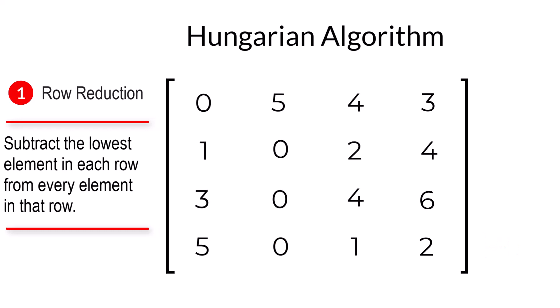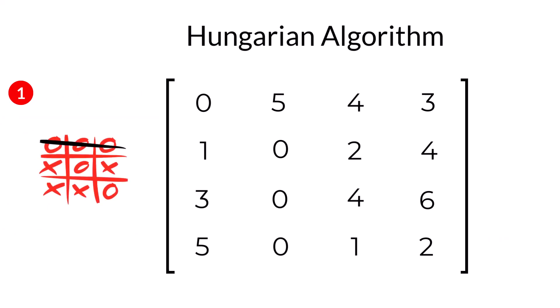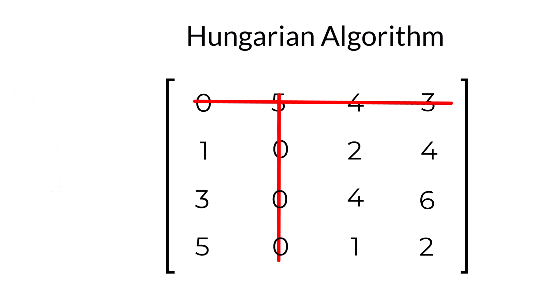We now have some zeros in our matrix. So, we need to play a game that I like to call Hungarian tic-tac-toe. We're on the noughts team. So, we put a horizontal or vertical line through each nought. If the minimum number of lines required to cover them all is equal to the number of allocations, then we can jump straight to step four. We only needed two lines to cover them all. So, we need to continue.